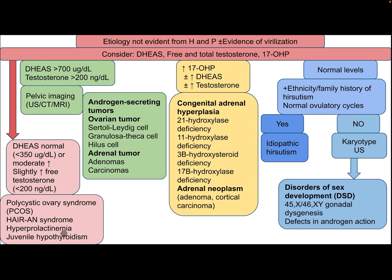If testosterone is more than 700 or free testosterone is more than 200, the patient needs pelvic imaging (ultrasound, CT, or MRI). Differential diagnosis includes androgen-secreting tumors: ovarian tumors such as Sertoli-Leydig cell, granulosa-theca cell, or hilus cell tumors, and adrenal tumors including adenoma or carcinoma.